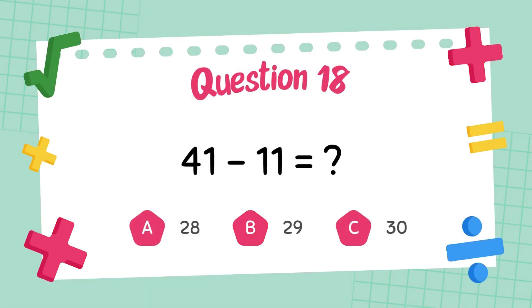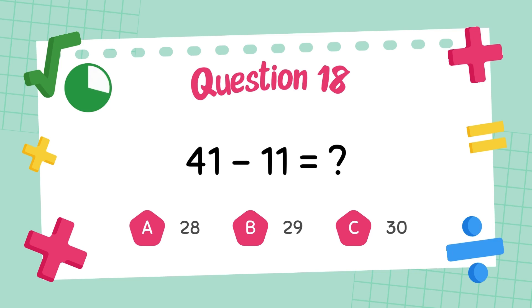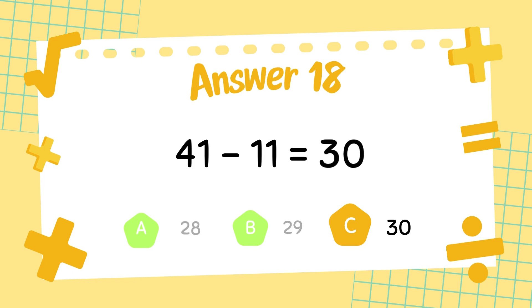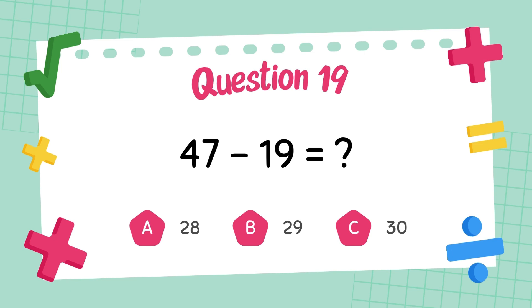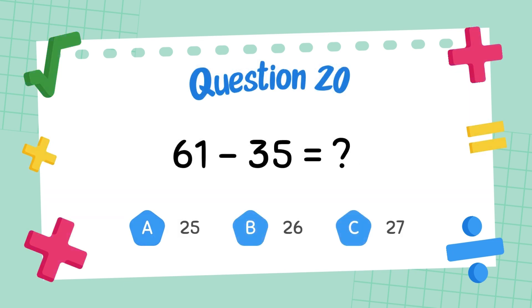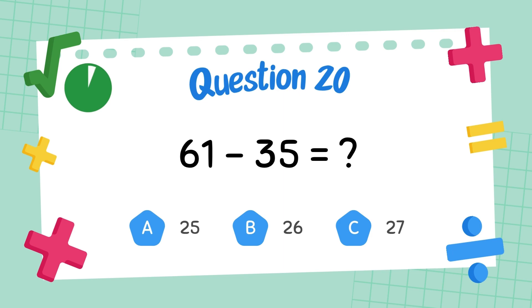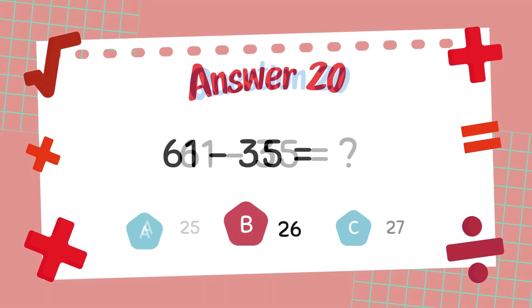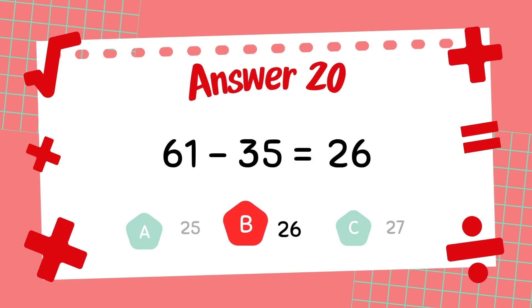What is 41 minus 11? The answer is 25. What is 37 minus 19? The answer is 27. What is 61 minus 35? The answer is twenty-six.